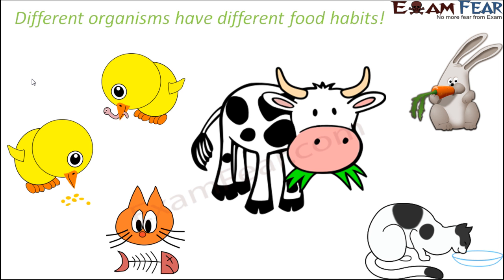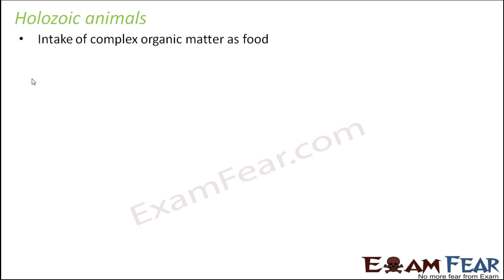All animals which take in complex organic matter as food — for example, eating leaves of plants, which is complex matter — have to chew it, break it down inside the body into its simplest form, and that is how they get energy. This process is called digestion.